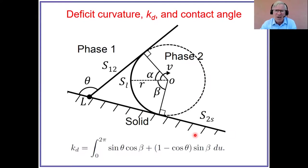So we've got a complex diagram looking at it. We can evaluate this deficit curvature and it depends on two things. One is the contact angle, theta, so we're okay there. The other is this angle beta, which is the angle that the contact line makes with the solid.